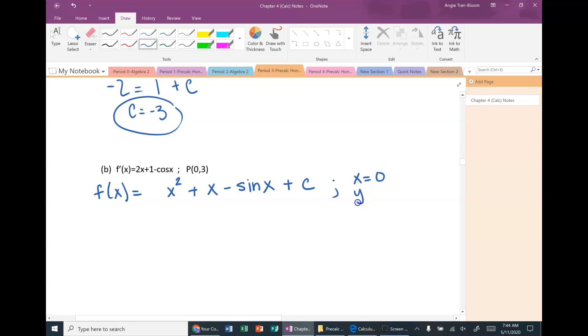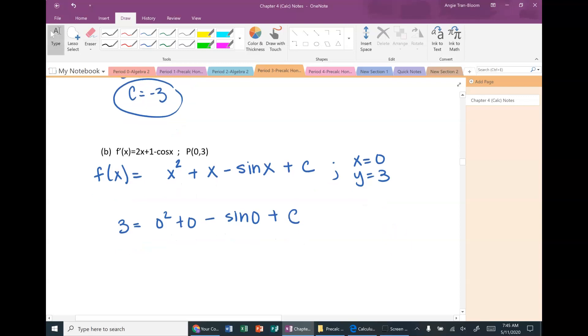So now that you have that, you want to plug in x equals 0 and y equals 3 and solve what c is. So 3 equals 0 squared plus 0 minus sine of 0 plus c. Well, luckily all of this turns into 0, so c comes out to be 3 right away. Then you're going to have your original function f of x equals x squared plus x minus sine of x plus 3.